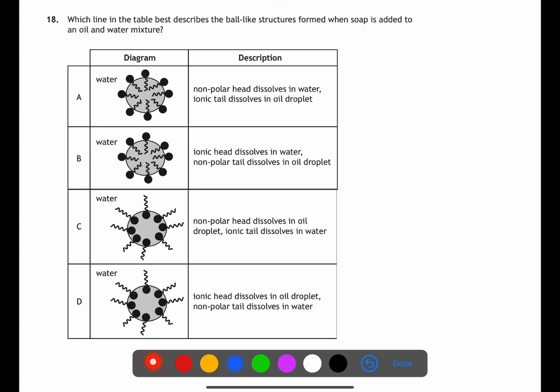For question 18 we're looking for the best description of the ball-like structure called a micelle which is formed when soap is added to oil and water mixture. A soap is made up of a hydrophilic head and a hydrophobic tail. The head will dissolve in the water and the tail in the oil so we can eliminate C and D immediately. The description for A it says the non-polar head dissolves in water. This is not true. In the description for B it says the ionic head dissolves in water which is the case and the non-polar tail dissolves in oil which is also true. This means that B is the best description.